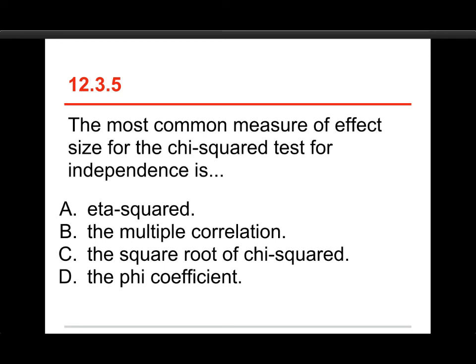All right, last question. The most common measure of effect size for the chi-squared test for independence is A, eta-squared, B, the multiple correlation, C, the square root of chi-squared, or D, the phi-coefficient.